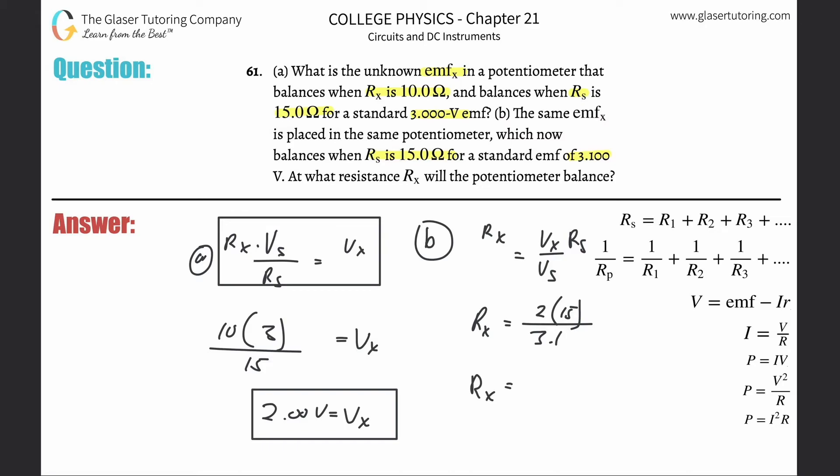I'll just plug into the calculator to double check. 2 times 15 divided by 3.1 comes out to... okay, this is now 9.68 ohms. That's what happens when you're doing this at 12:47 at night.